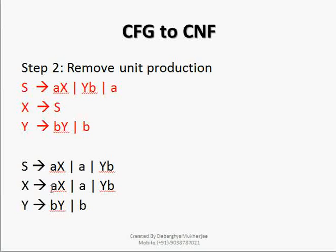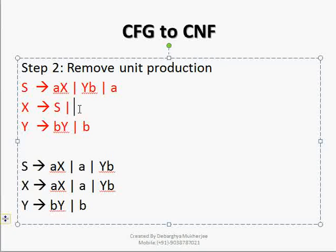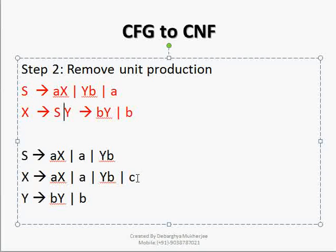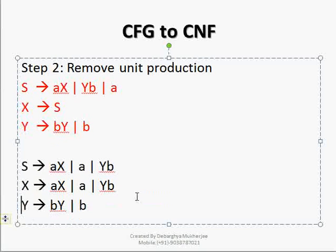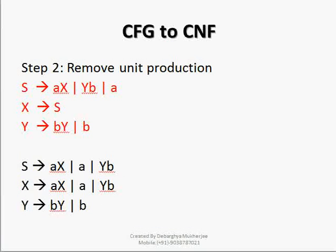If we have any other rule with X, then that will remain the same. For example, if we have a small 'c', we will keep this small 'c' as it is — there will be no change. We will simply replace S with our given rule. The rest of the things will remain the same, so Y→bY, Y→b, and S. From the knowledge of our last class we are going to replace these rules.